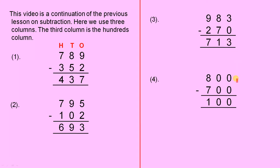800 take away 700. 0 take away 0 is 0, 0 take away 0 is 0, and 8 take away 7 is 1, so the answer is 100.